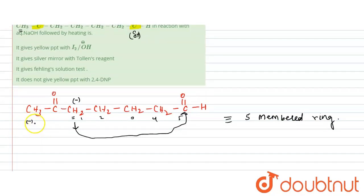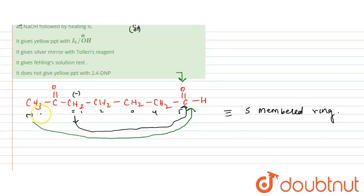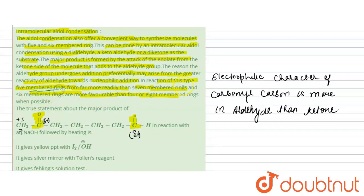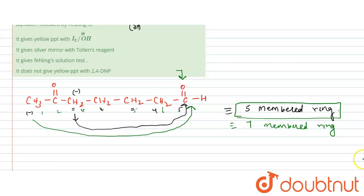But if the alpha hydrogen from a different carbon leaves and that carbanion attacks the aldehyde carbonyl carbon, counting the atoms: one, two, three, four, five, six, seven — a seven-membered ring would be formed. We know that five-membered rings are far more readily formed than seven-membered rings, as stated in the question. Therefore, the five-membered ring is preferred, meaning the first attack — forming the five-membered ring — is favored.